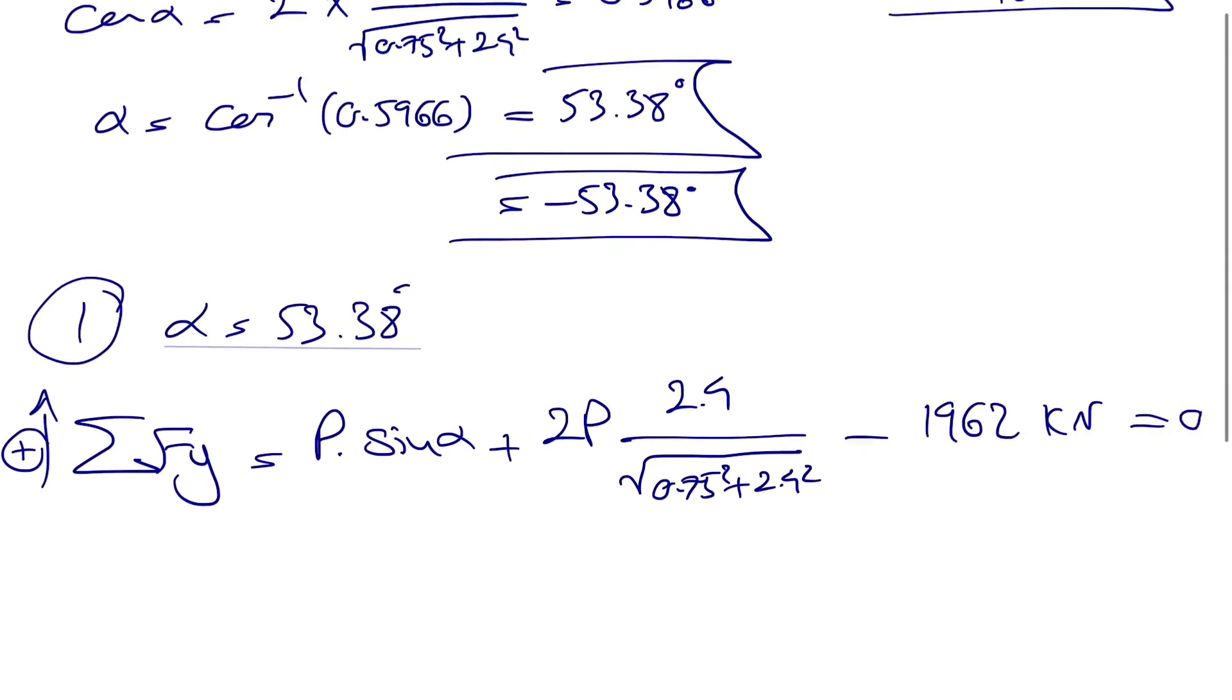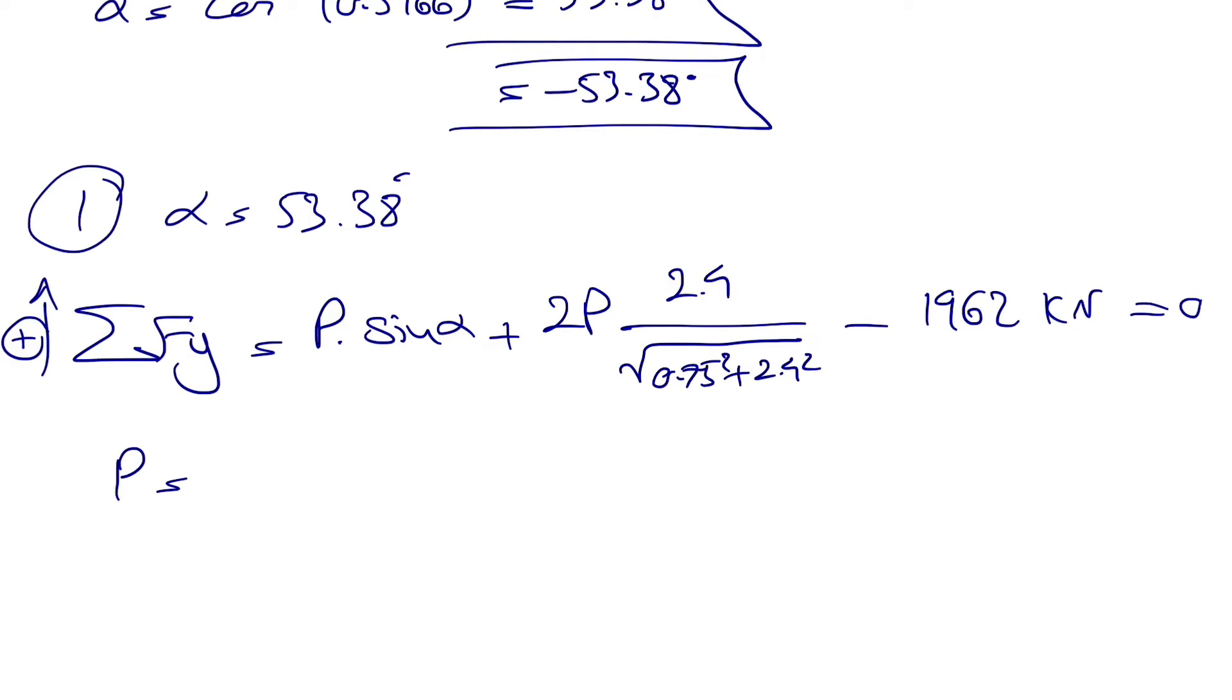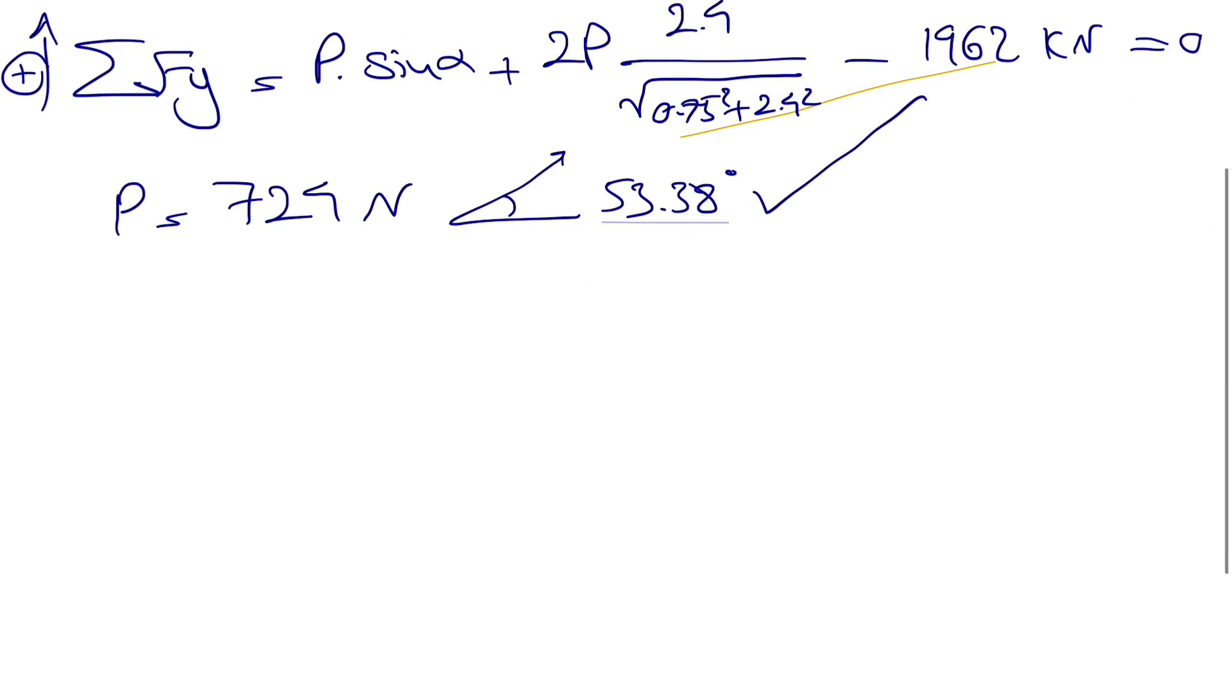And minus the weight of the crate equals zero. From here there is one unknown, which is P, and if we calculate we'll get 724 newtons.